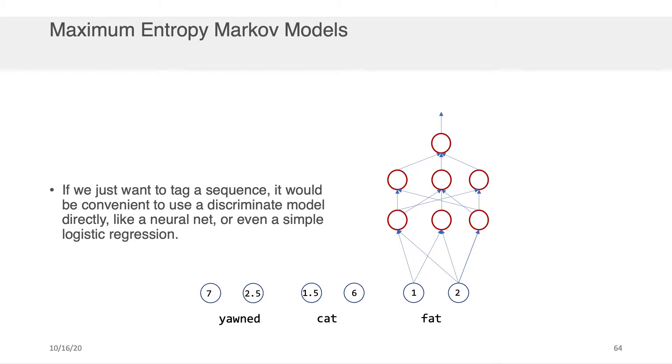So returning back to the diagram that we were looking at earlier, let's assume that we had the fat cat yawned here, and we wanted to come up with some labels for this.